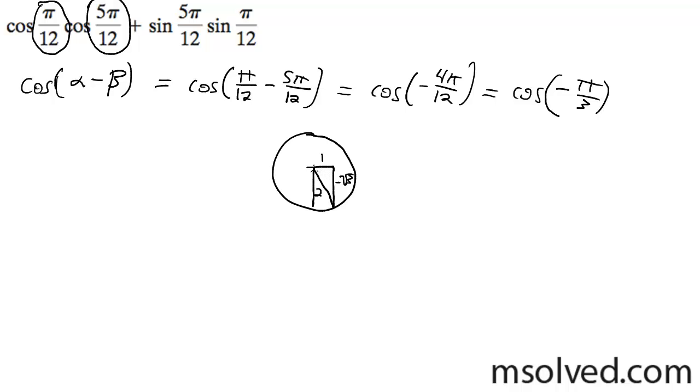Cosine is the adjacent over the hypotenuse, so 1 over 2. In this case, the cosine of negative pi over 3 is simply equal to 1 half.